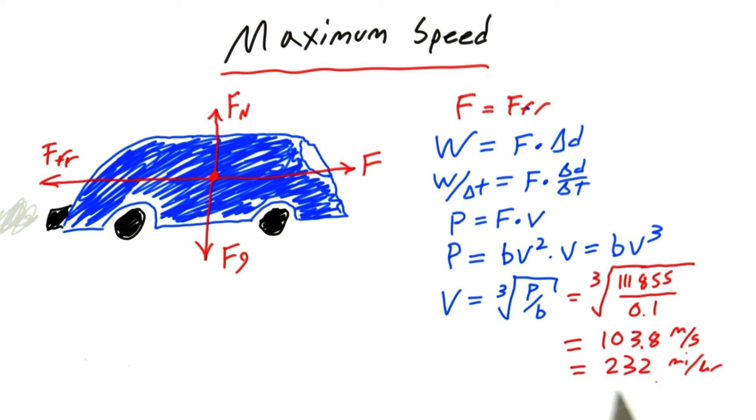And if you're curious, that's about equal to 232 miles per hour. Of course in the real world, we're not just dealing with air friction, we're dealing with all sorts of friction. So this value might be a little higher than you'd expect. But if you got this value, congratulations on solving the problem.